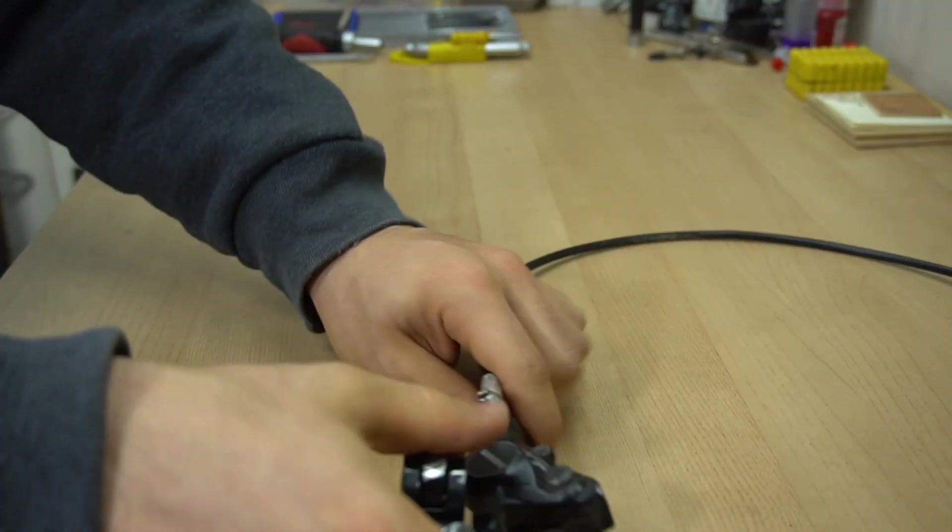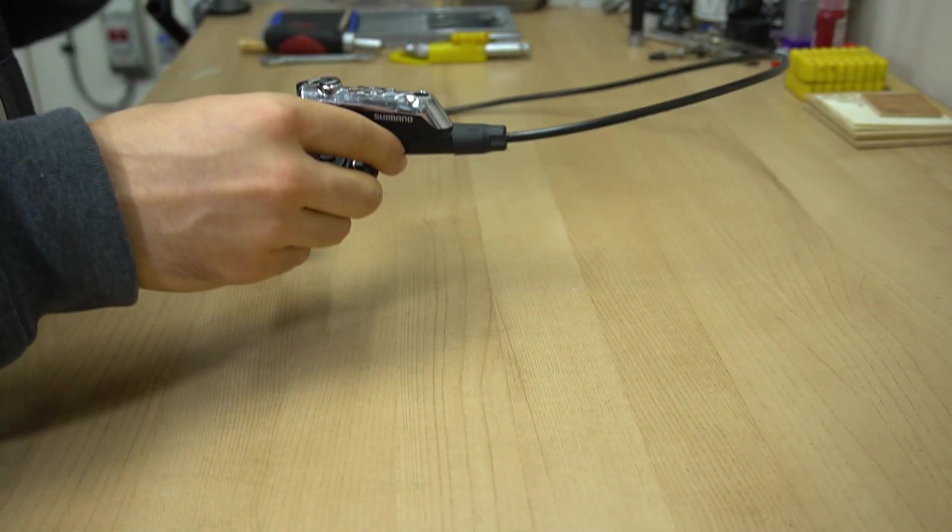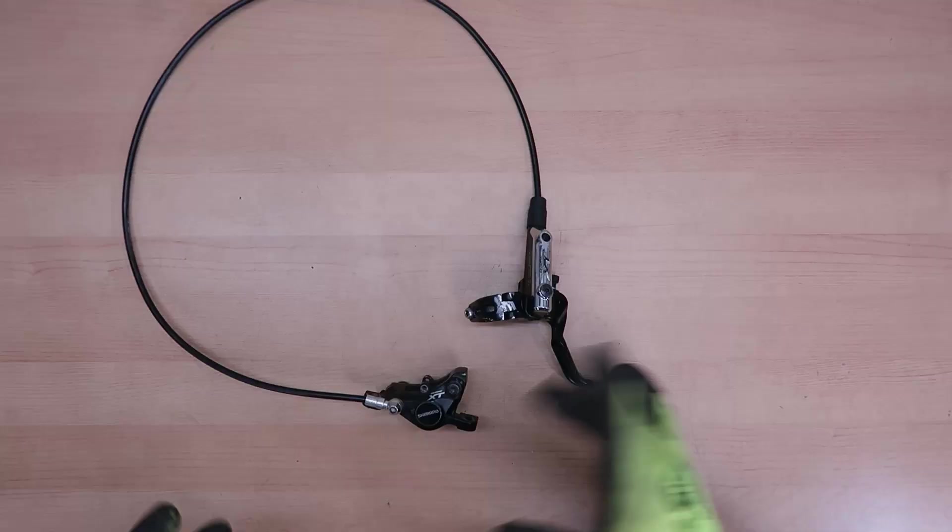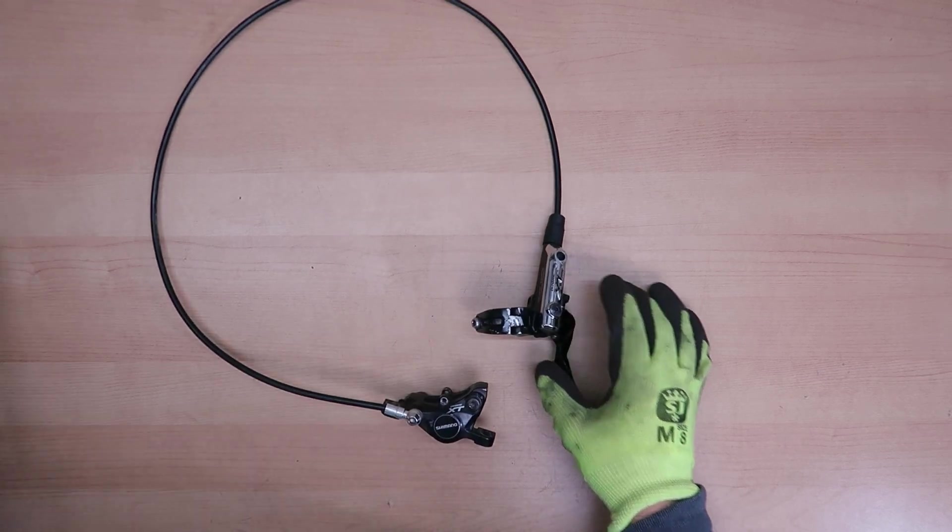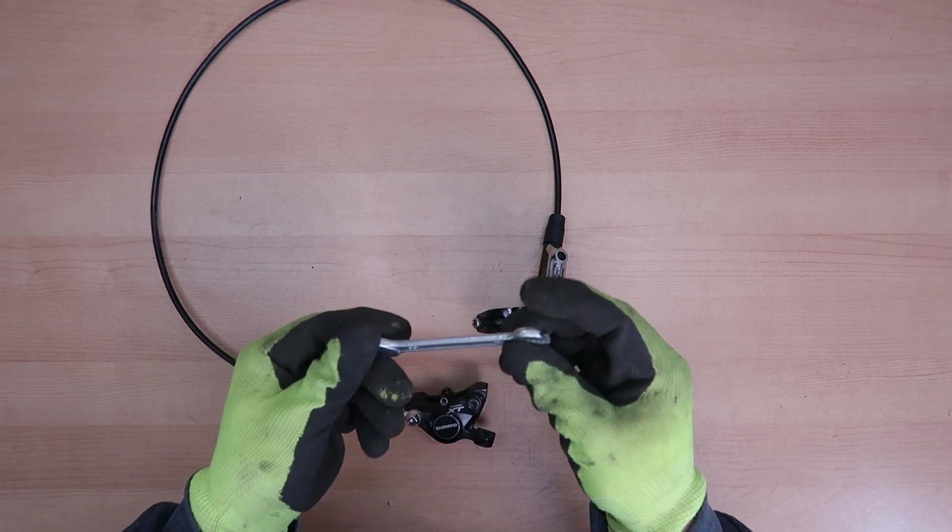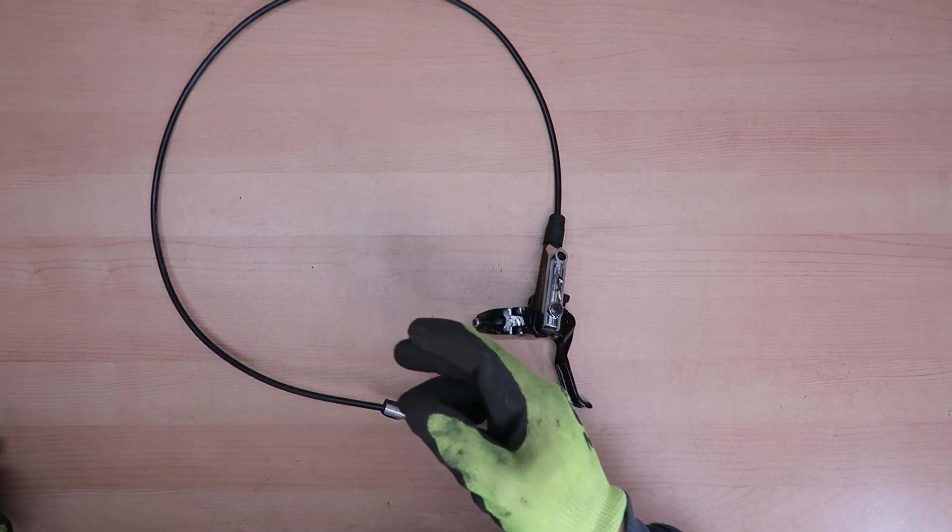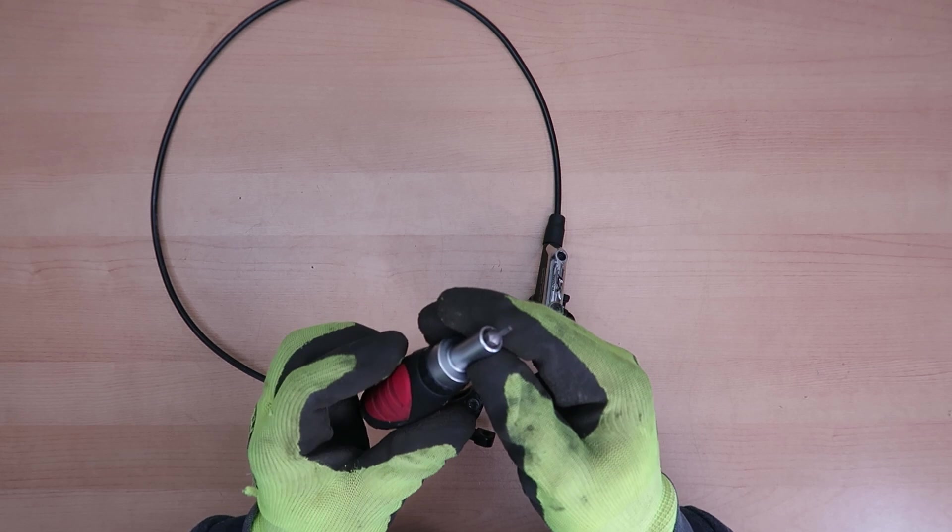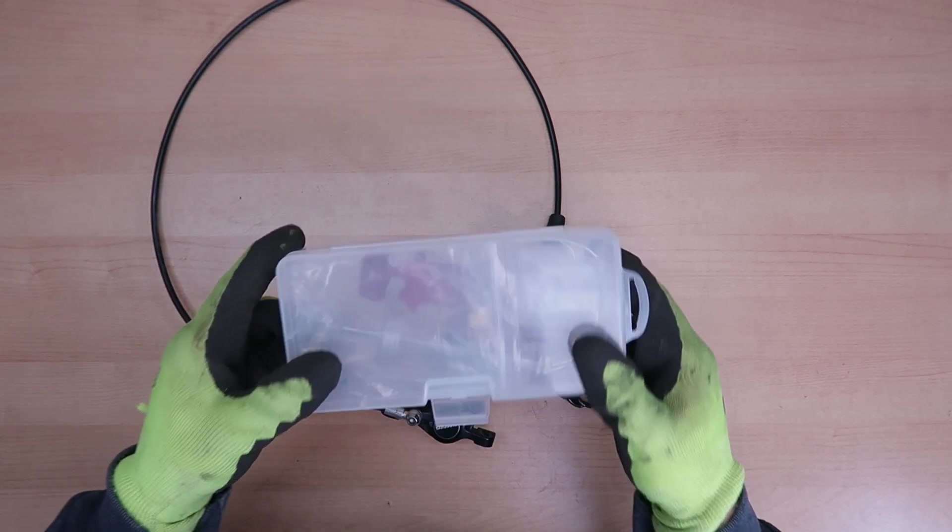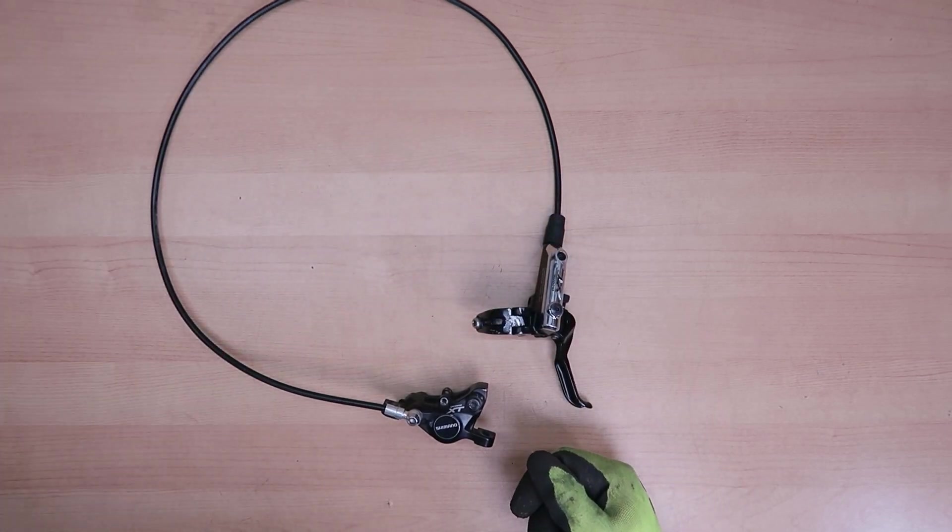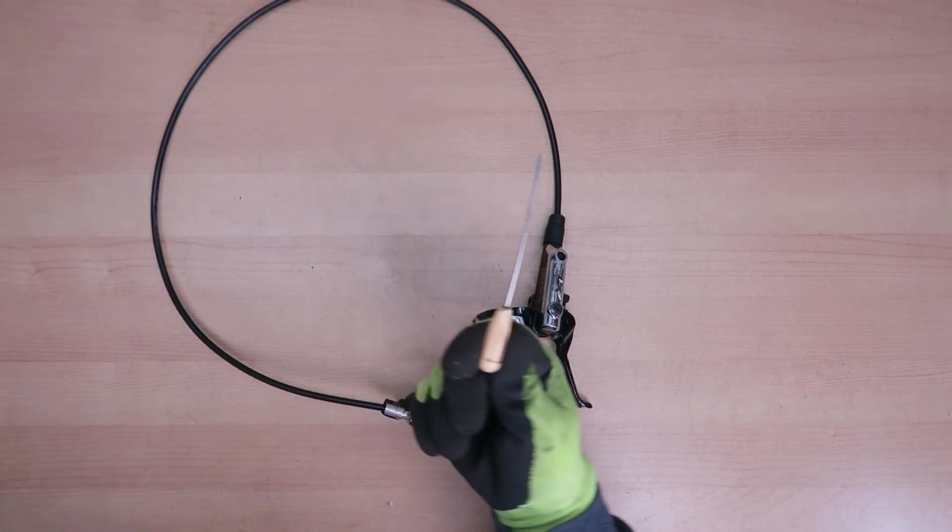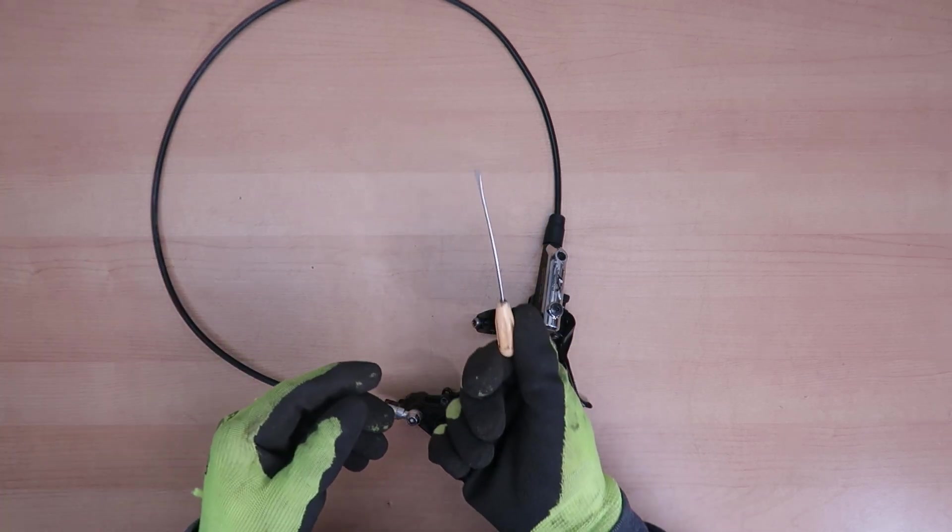I'm going to start first at the front lever. What we're going to need for this is a set of Allen keys, a 7mm and 8mm spanner, some Torx bits with a screwdriver, a Shimano bleeding kit, a pick, and a small screwdriver just for prying out things.